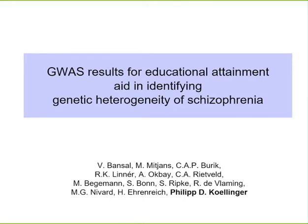The general idea in this project is that we may actually learn something new about schizophrenia by borrowing information from a genetically related trait — in this case, education attainment. I will show one relatively simple way how we can test for genetic heterogeneity among schizophrenia symptoms using two sets of GWAS summary statistics and a holdout sample that has very detailed schizophrenia phenotypes.